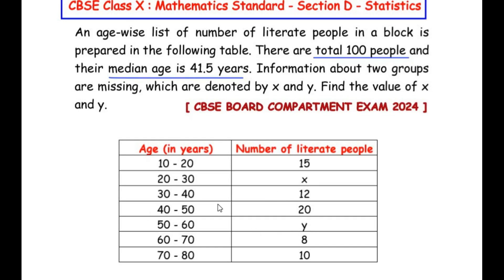Let us understand this given table first. A survey is being done in which the number of literate people in different age groups is listed. For example, the number of literate people in the age group 10 to 20 is 15. Similarly, we have to find the number of literate people in the age group 20 to 30, which is given as x, and y is the number of literate people in the age group 50 to 60. The hints given are: total of 100 people were surveyed, so total frequency is 100, and the median is 41.5 years.